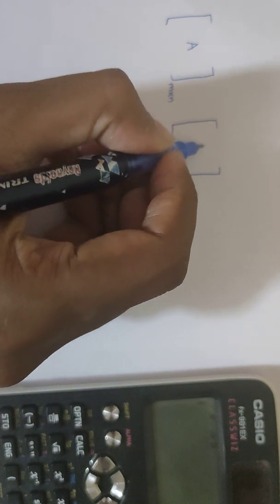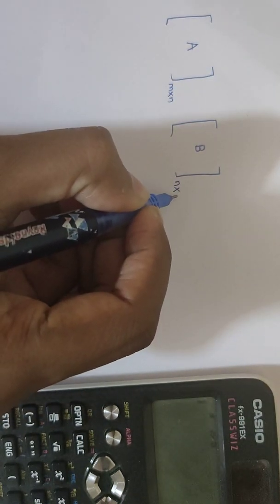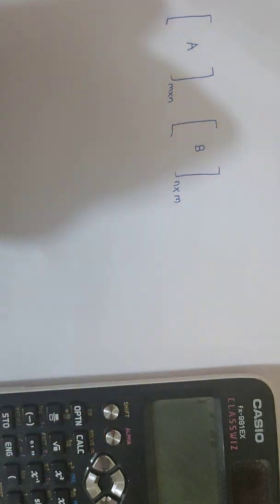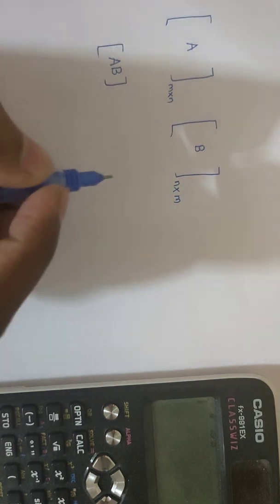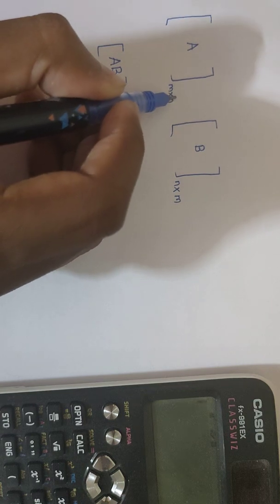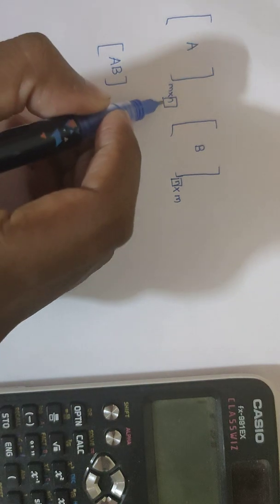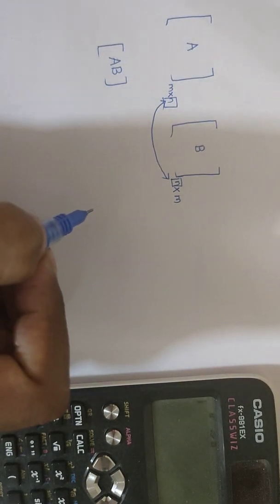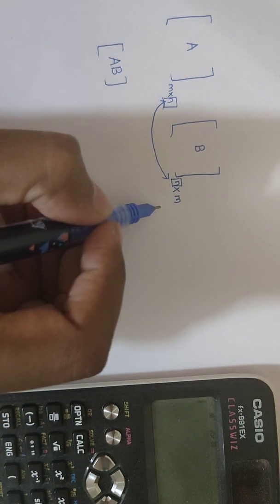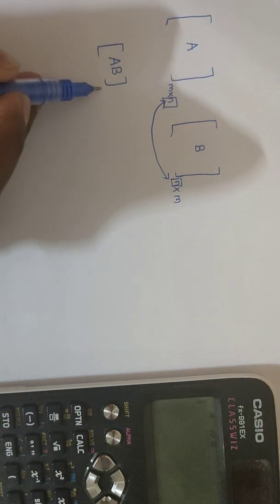Then the matrix multiplication AB is possible only when the column of the first matrix matches with the row of the second matrix. Means both these things should match, then only the matrix multiplication is possible.